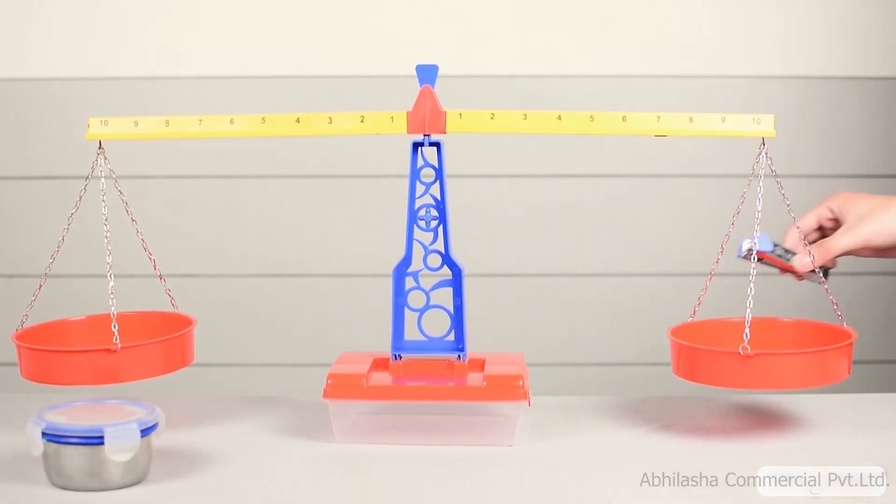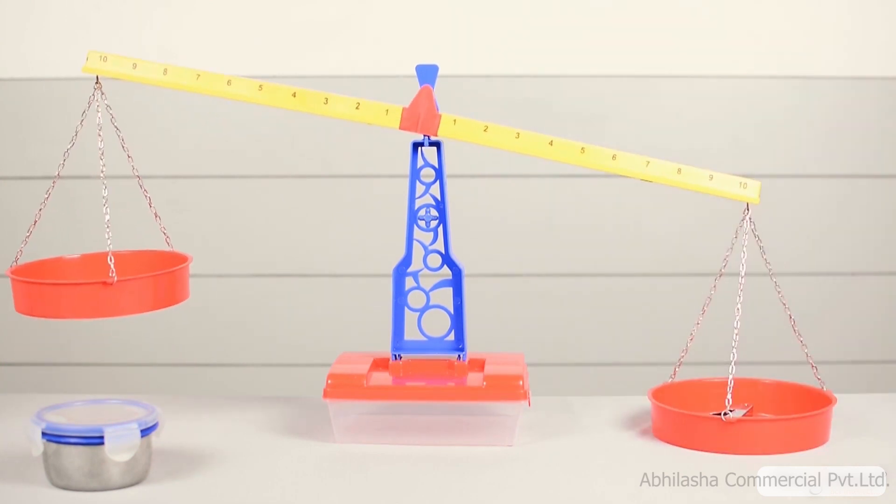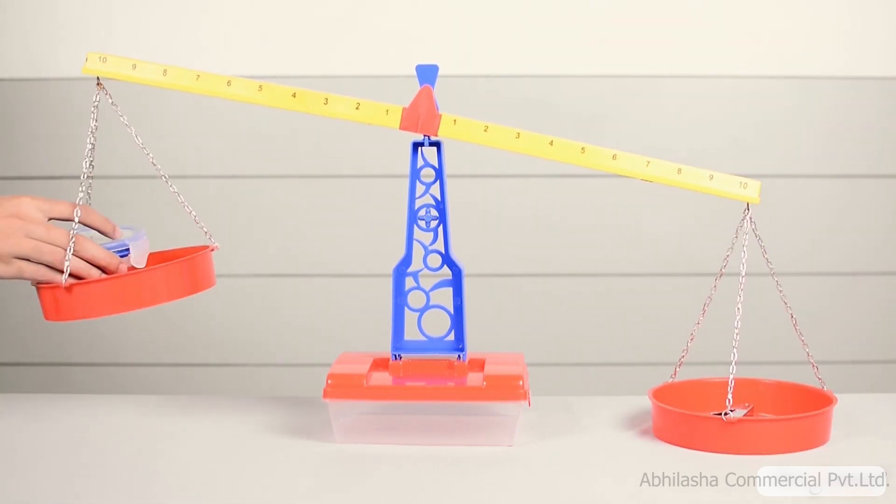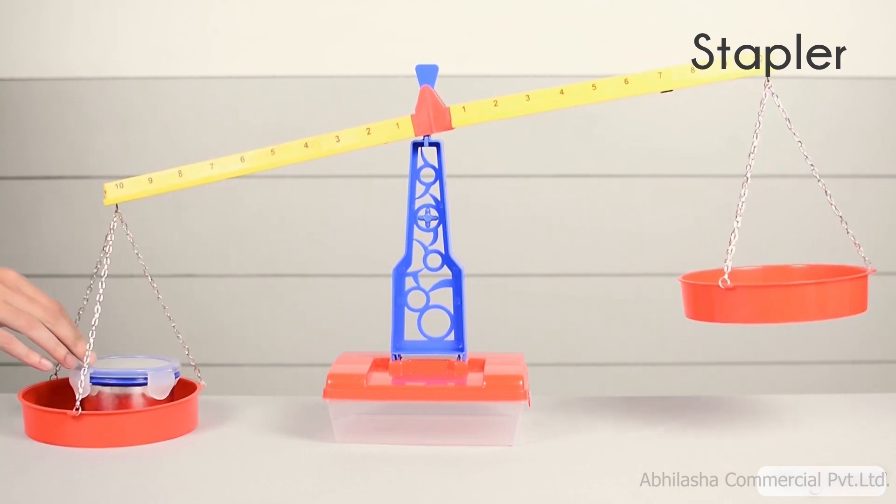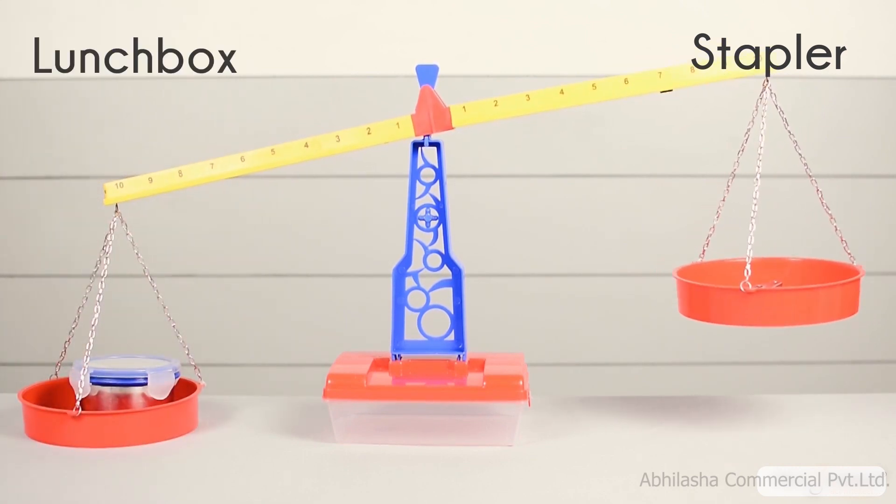We can also compare the masses of various items. On one side of the balance, we put the stapler and on the other side, we put the lunchbox. The object that has more mass will go down whereas the object with less mass will go up. As can be seen, the lunchbox has more mass.